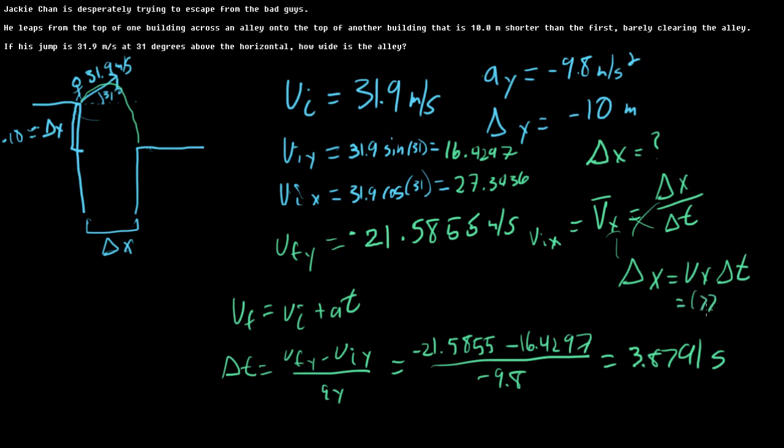vx is 27.3436, and then delta t is 3.8791. It's really, I ran out of space. That product is about 106.0686. Let's go check it.